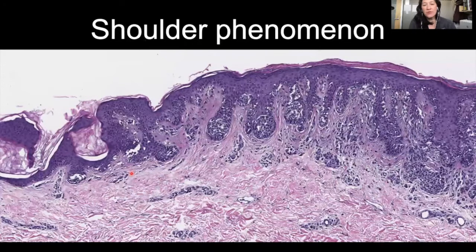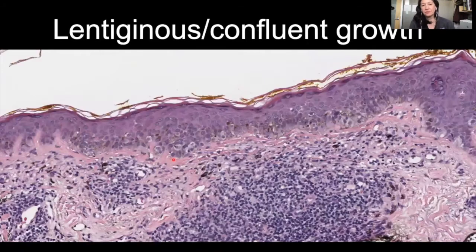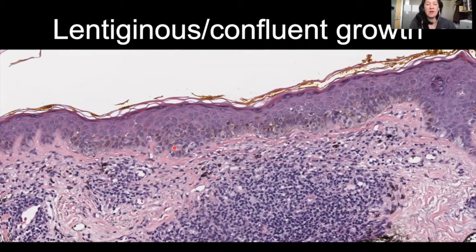Shoulder phenomenon is where you have a compound melanocytic proliferation and your junctional component extends far beyond the dermal component. In this example, here's our dermal component off to the right, and our junctional component just keeps going — that's the shoulder. Lentiginous or confluent growth is where you have crowded melanocytes marching along the line without any space between them — no keratinocytes between these. It can be single cells or nests.